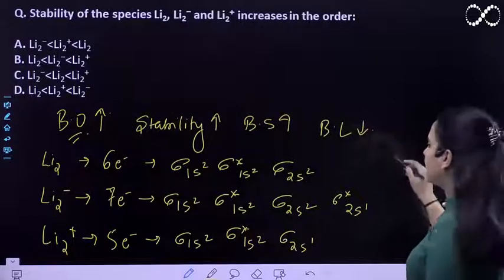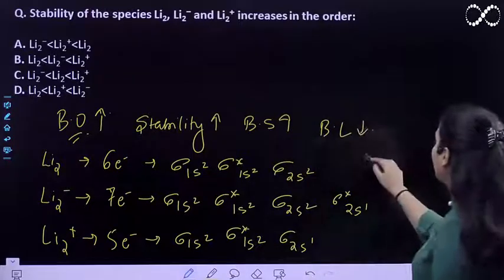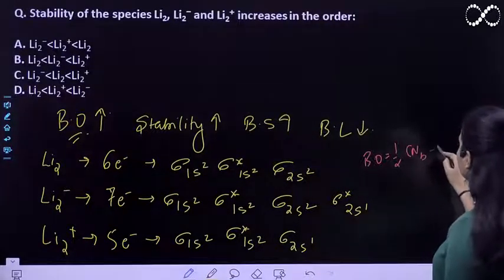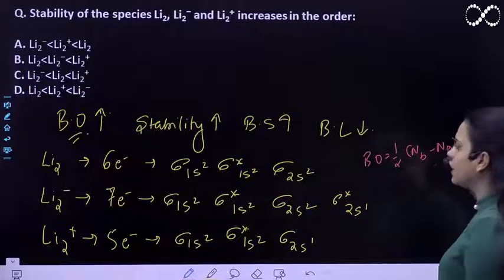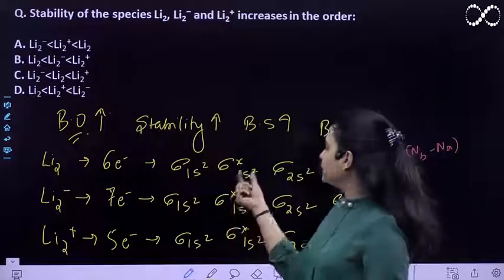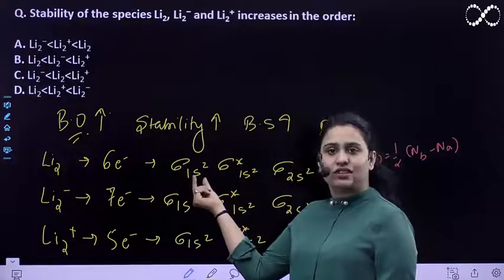Now, if you want to calculate the bond order for the following: bond order is half of the number of electrons in bonding minus number of electrons in anti-bonding. Anti-bonding electrons are the ones with star in the configuration, and bonding electrons are the ones simply written.